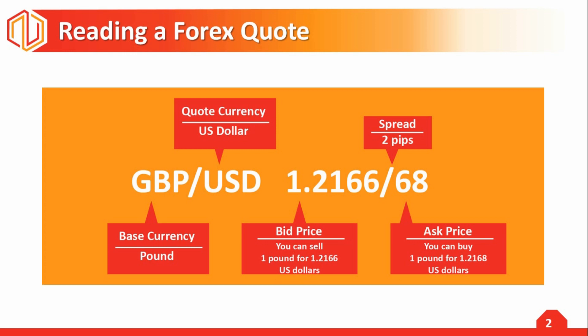A currency pair consists of a base currency and a quote currency. The quote currency is also sometimes called the counter currency. These pairs represent the currencies that you are trading. The first part of the pair is called the base currency — the one on the left — and the second is called the quote currency.